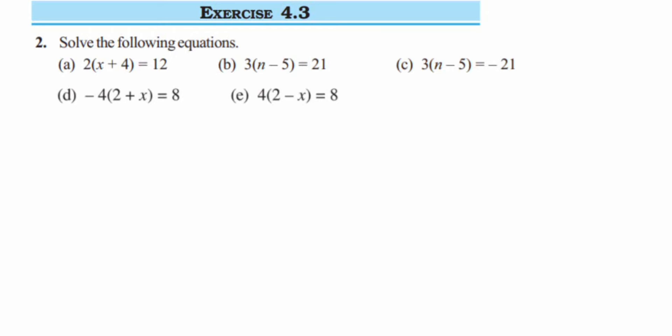Hello everyone, here I am doing exercise 4.3, second question, from Simple Equations of class 7 math. The question is to solve the following equations. This is similar to the first question but a few more steps will be required. Let's start with the first one: 2 into bracket x plus 4 is equal to 12.